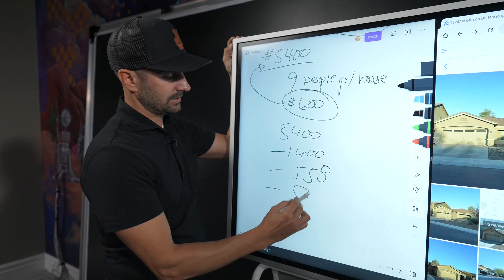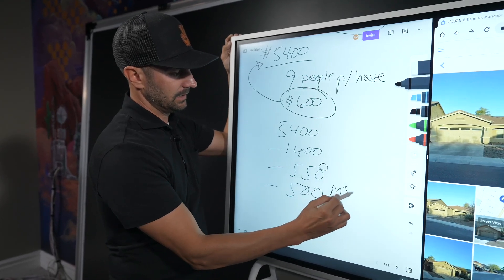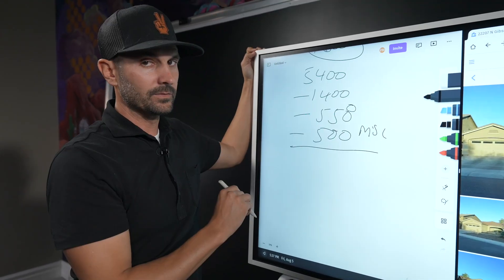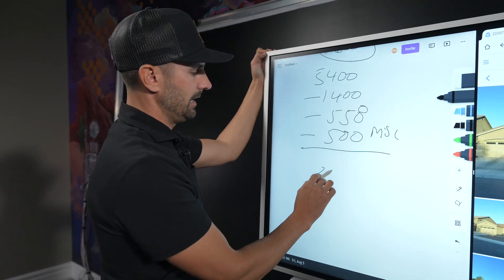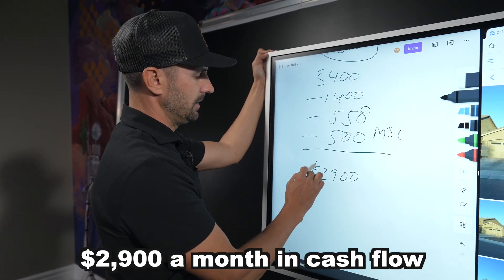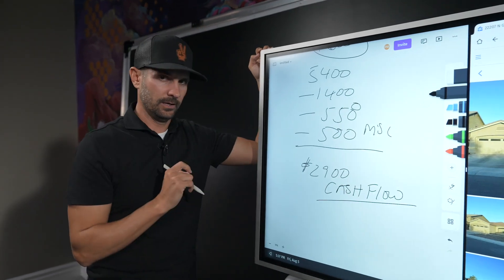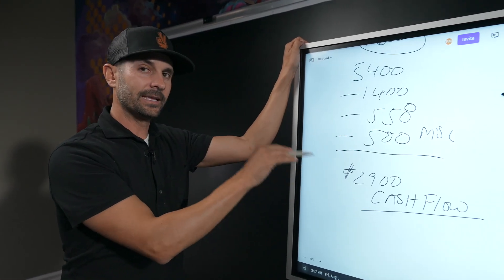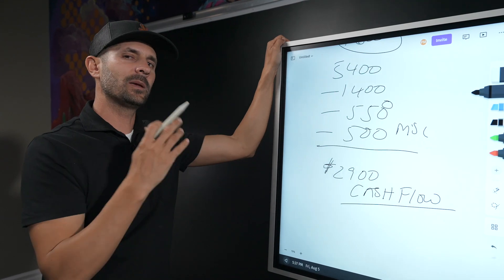A lot of times they'll put two, three people in the same room and just have bunk beds and stuff like that because this is temporary. People come in, they come out. So at $5,400 right now, you subtract your $1,400 payment, you subtract your $550 to your private money lender, and you subtract another, let's say, $500 for miscellaneous.